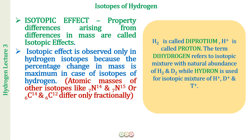There are certain terms to remember. H₂ is called diprotium. H⁺ (a hydrogen atom after loss of an electron) is called a proton, because only one proton is left behind. The term dihydrogen refers to the isotopic mixture with the natural abundance of H₂ and D₂. Finally, the term hydron is used for the isotopic mixture of H⁺, D⁺, and T⁺. Please remember: diprotium, proton, dihydrogen, and hydron.